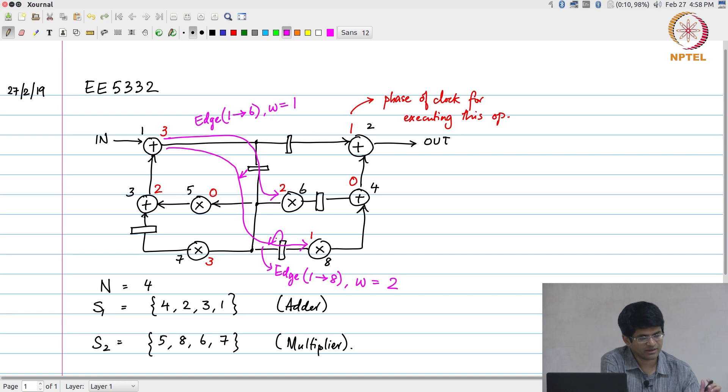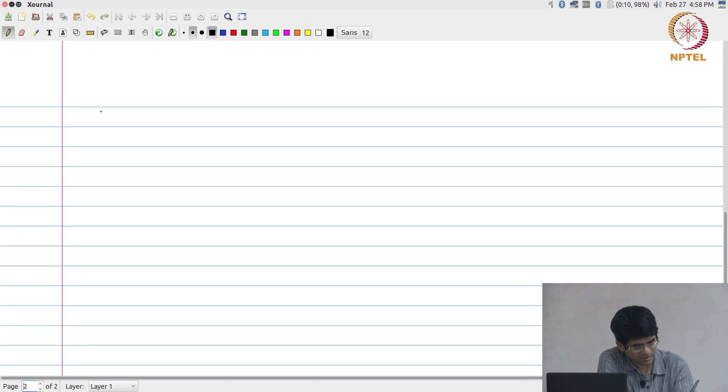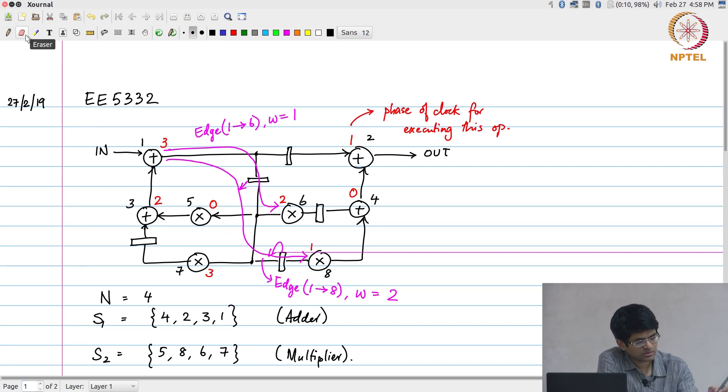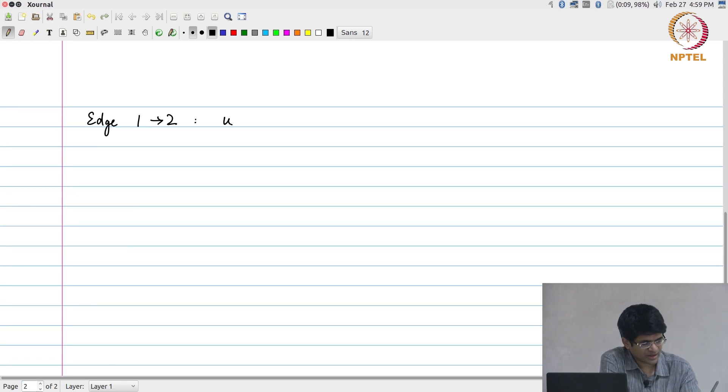Now, with this structure in mind we then went forward and said I can now compute something called a df value. The df value was essentially what are the extra delays or the extra number of registers that are required in order to get the data correspondingly to the right input at the right time and state. To understand that a little bit better let us take a couple of examples, I will look at the edge from 1 to 2. This edge from 1 to 2 has w equal to 1.